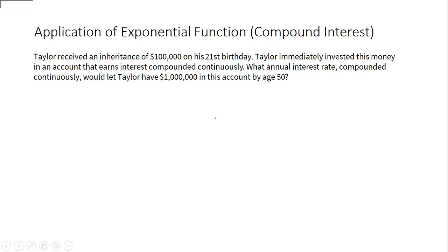To solve this problem, we're going to use the compound interest formula A = P·e^(rt). We know that our initial investment was $100,000. We want the ending amount to be $1 million. And we also know the time: it started at age 21 and ended at age 50, so that's 29 years.